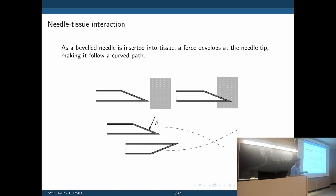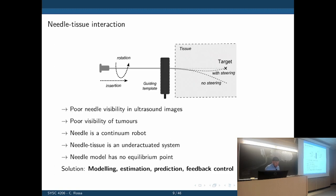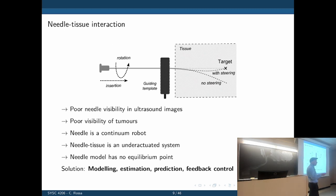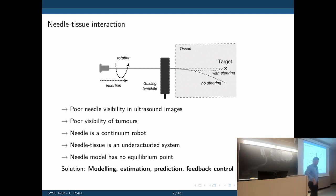From a more technical standpoint, in brachytherapy we have a guiding template — a rigid structure with holes — that guides the needle in the tissue. As we insert the needle, it will bend downwards with no steering. But we have a control action: we can rotate the base of the needle and change the direction of the net force at the tip, making it go the other way. We could potentially steer the needle by doing a 180-degree rotation midway — it goes down first, we rotate it, it goes back up, and eventually reaches the target.